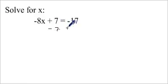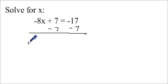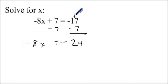So I'm going to subtract 7 from both sides like this. Okay, now I've got negative 8x and I've got negative 24. So negative 17 minus 7 is negative 24. And positive 7 minus 7 is just 0.